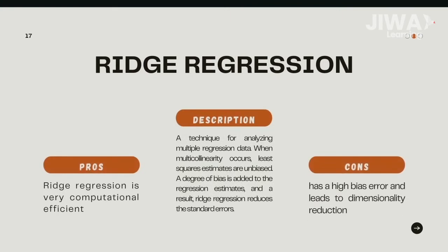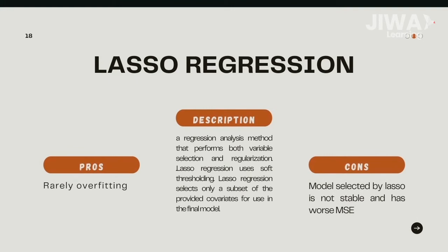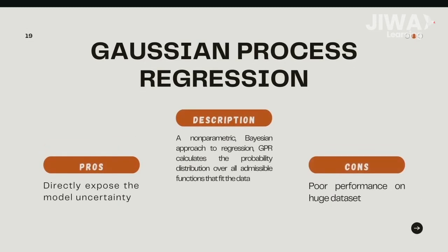Ridge regression is a regression technique for analyzing multiple regression data when multi-collinearity occurs. Lasso regression is a regression analysis method that performs both variable selection and regularization. Gaussian process regression is a non-parametric Bayesian approach to regression that calculates the probability distribution over all admissible functions that fit the data.